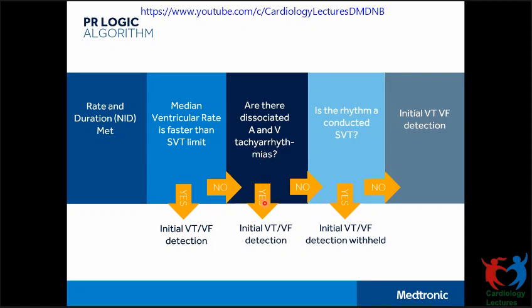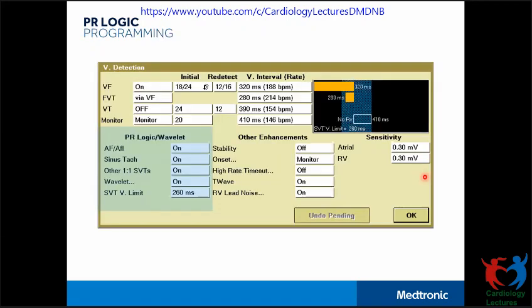If the ventricular rate is faster than the SVT limit, it proceeds with initial VT detection. If not, it looks for AV dissociation. If the A and V are dissociated, it proceeds with detection. If not, it looks for whether the rhythm is SVT — if yes, it withholds detection; if no, it proceeds with detection. On the programmer screen, PR Logic is found above Wavelet, with three distinct programmable features: one for atrial fibrillation and atrial flutter, one for sinus tachycardia, and one for other 1:1 SVTs.